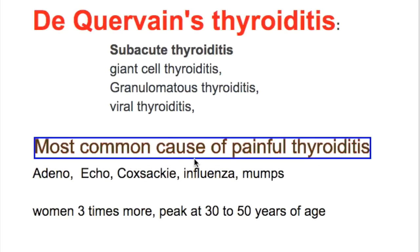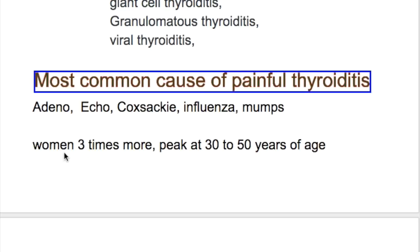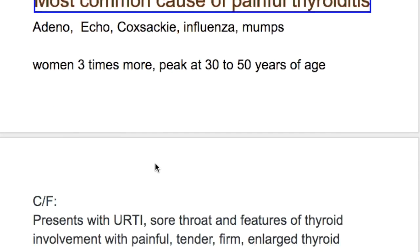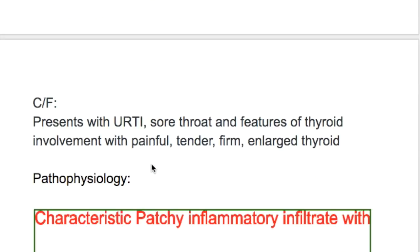It's the most common cause of painful thyroiditis. Which viruses are implicated in causing De Quervain's thyroiditis? Adenovirus, Echovirus, Influenza, and Mumps virus. The condition is three times more common in women, with a peak incidence at 30 to 40 years of age.